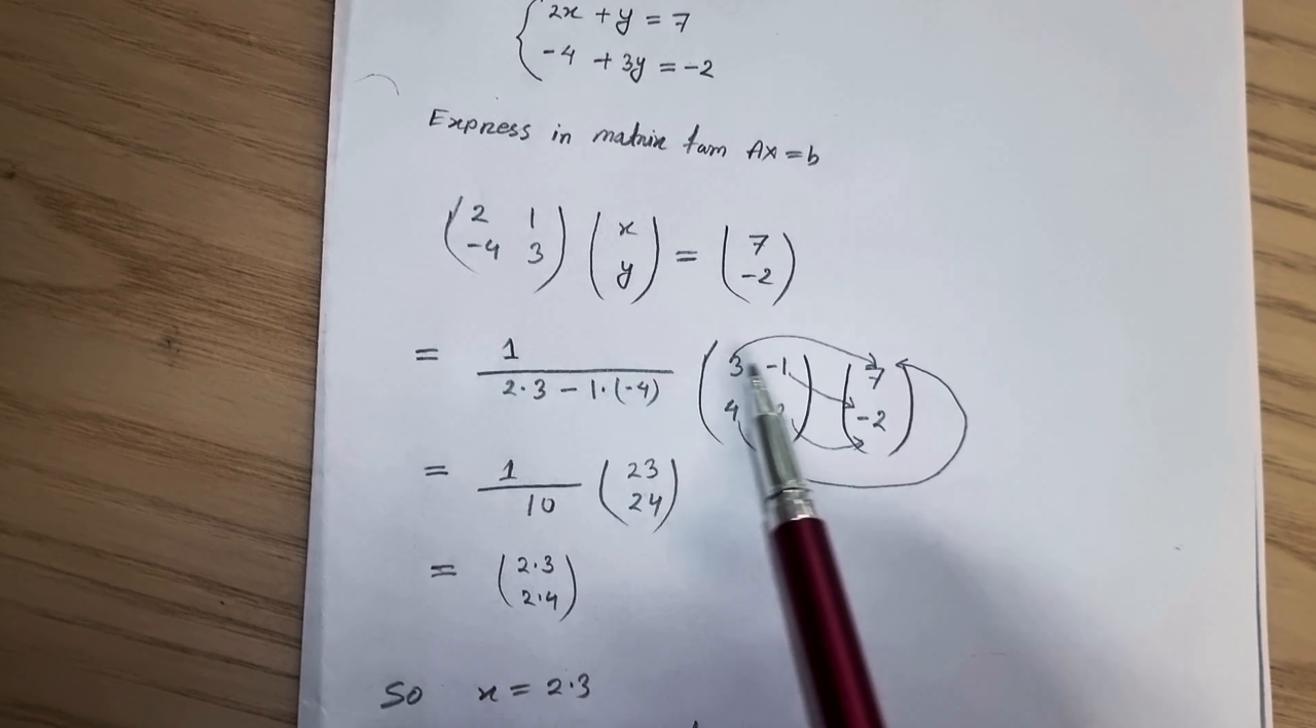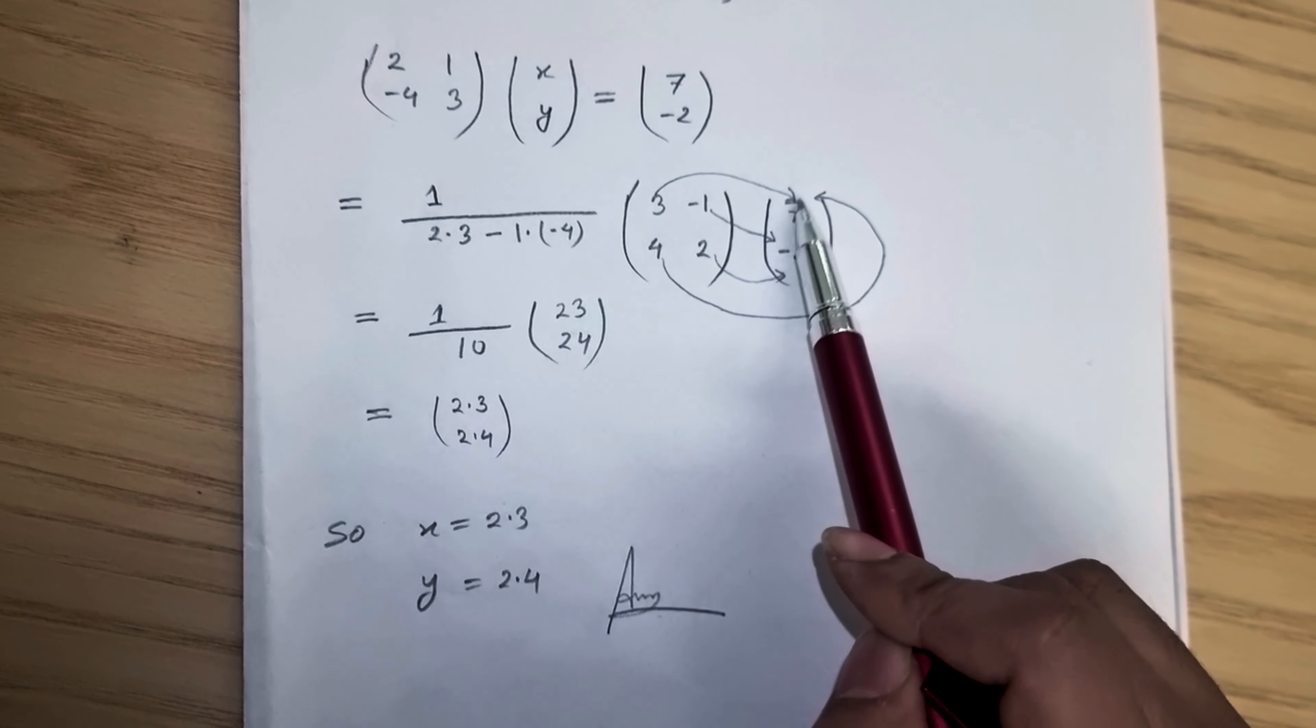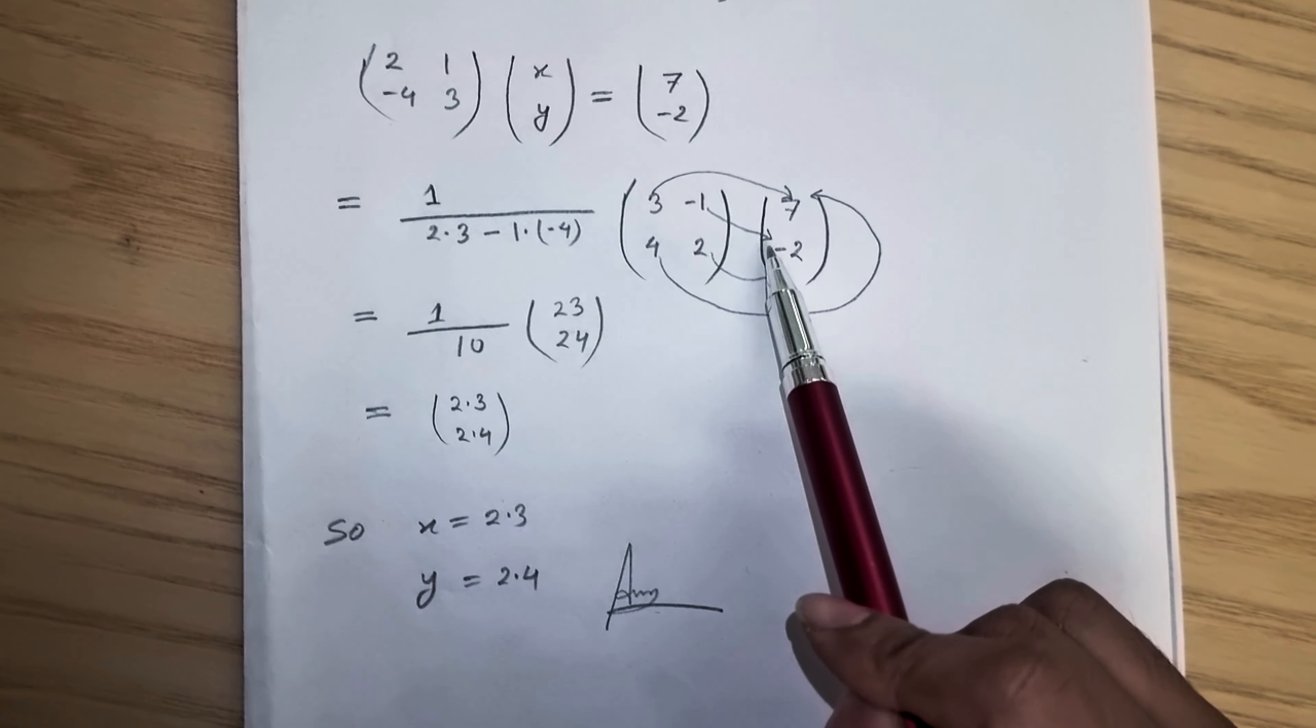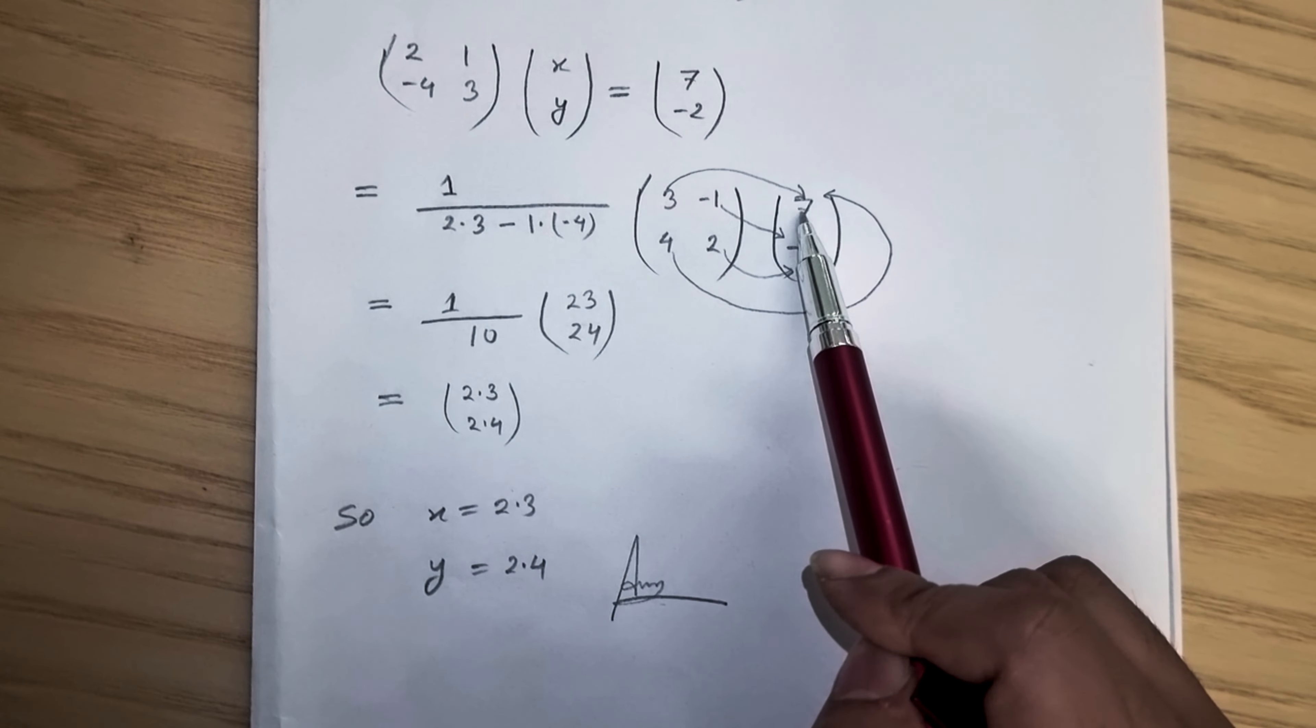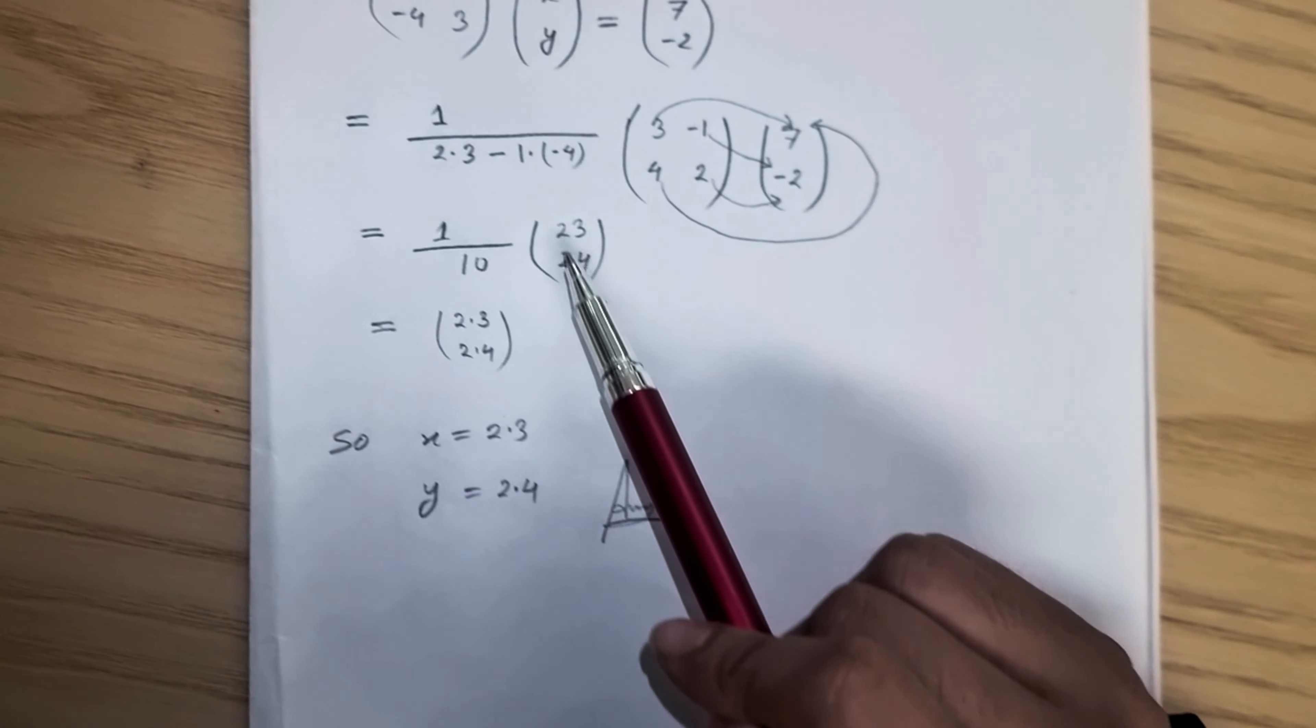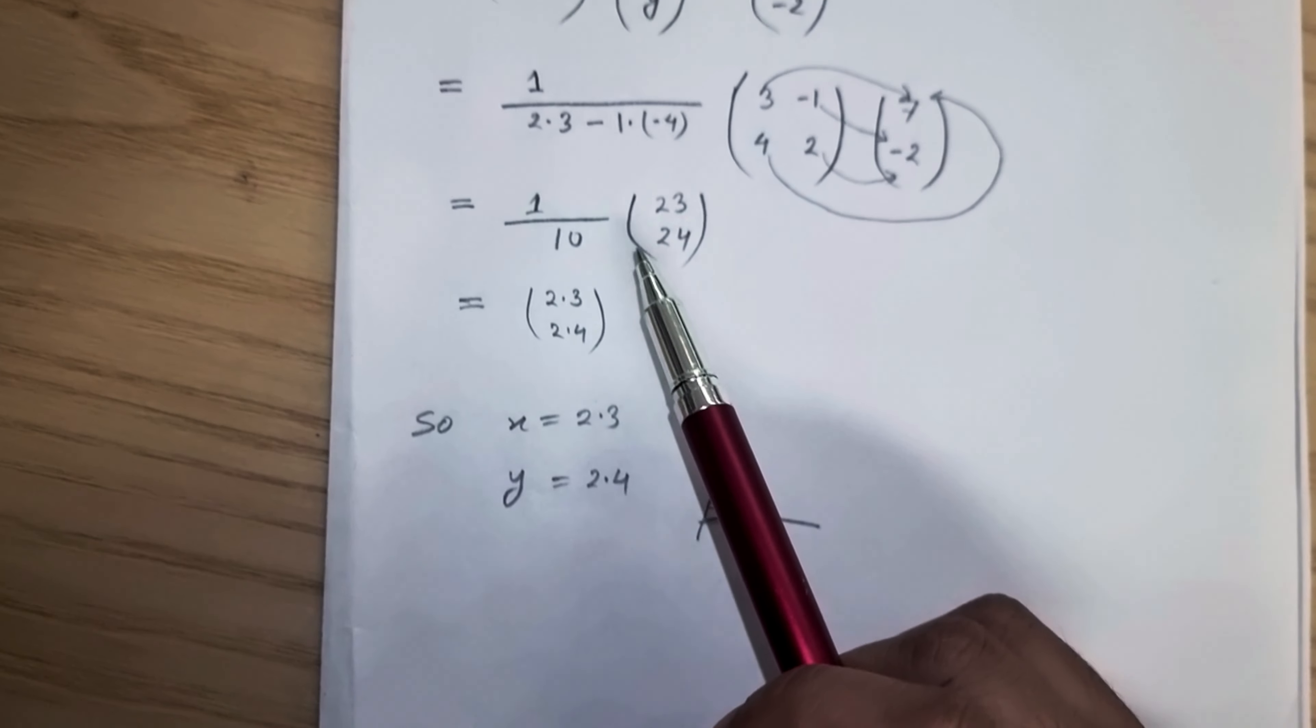We can calculate this way: 3 into 7 and minus 1 into minus 2, and then again 4 into minus 7 and 2 into minus 2. And we got this value 23 and 24.